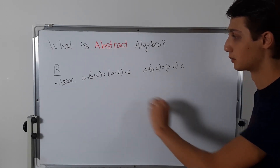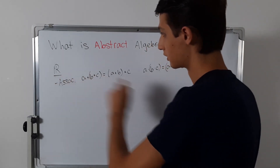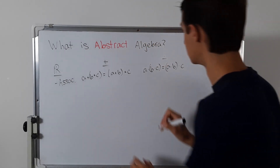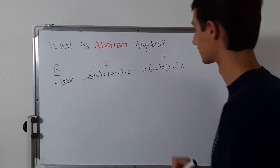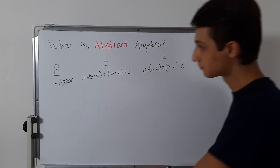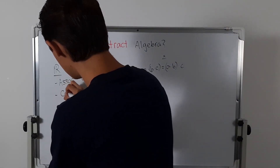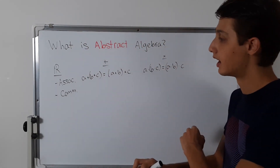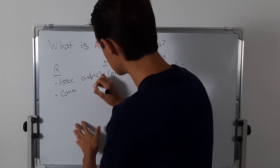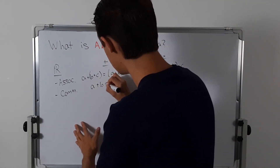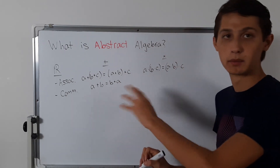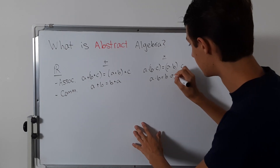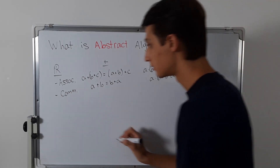For the real numbers we have both addition and multiplication. We also have the commutative property — commutativity says that we can exchange the order of things: a + b is the same as b + a. It doesn't matter; we can flip the order. The same is true for multiplication: a times b equals b times a.